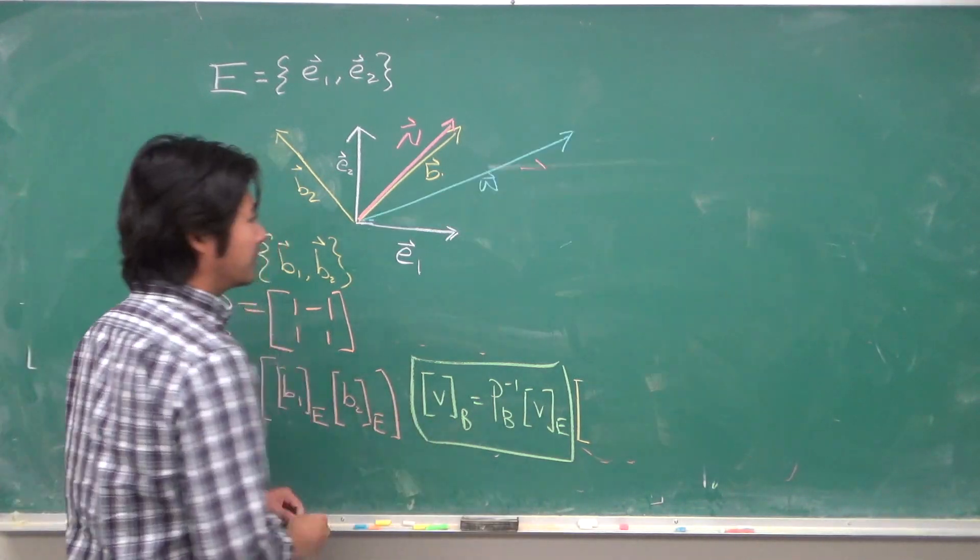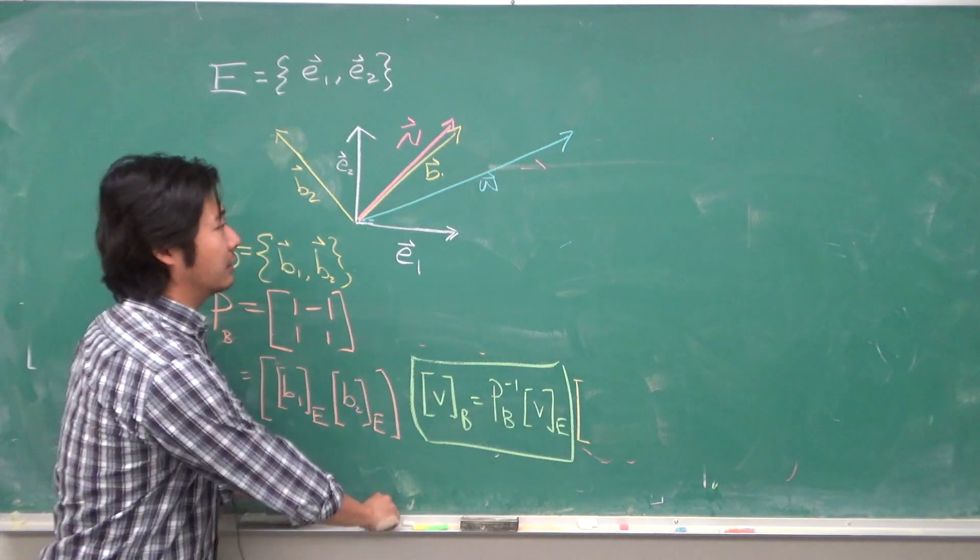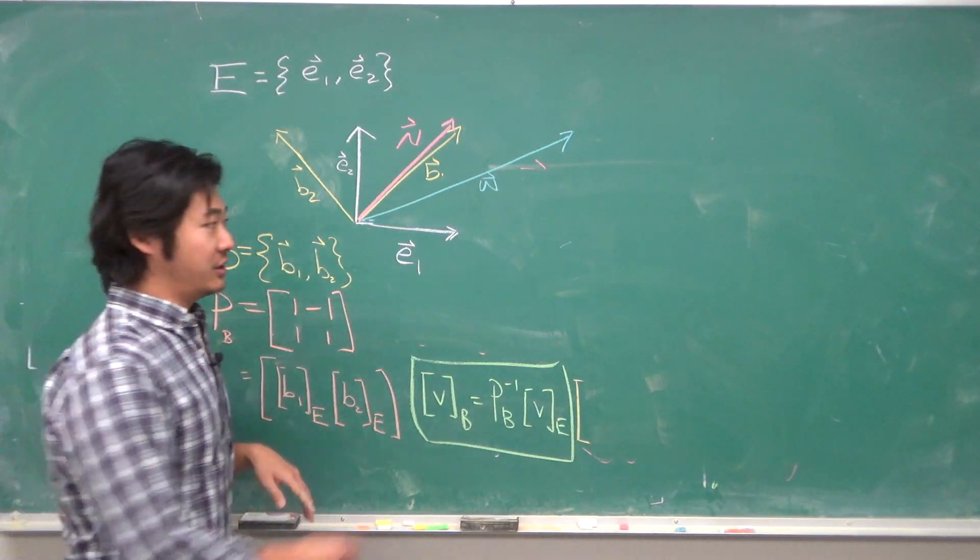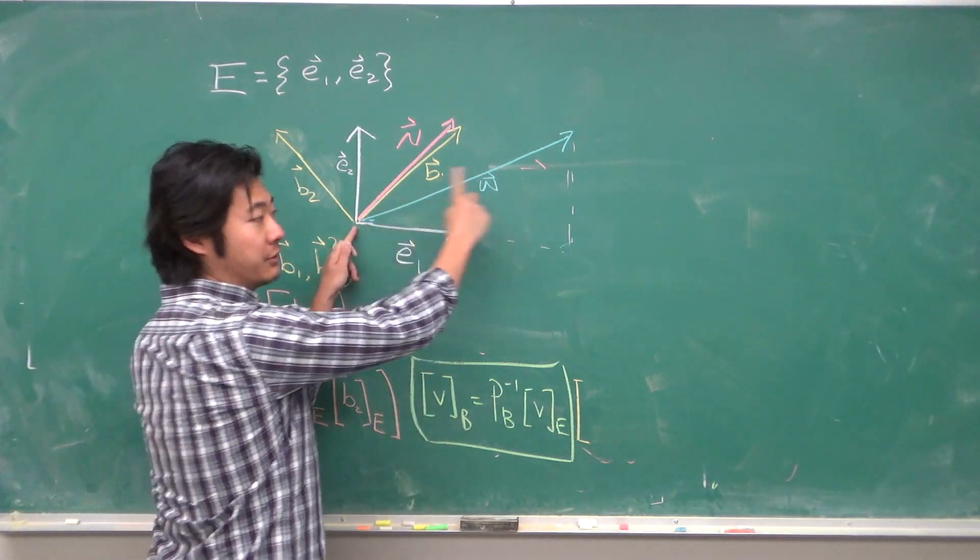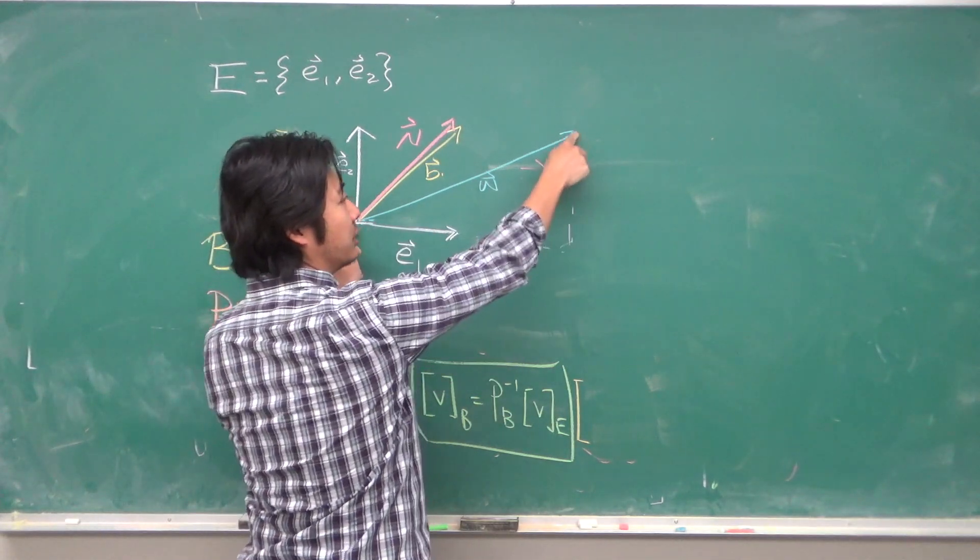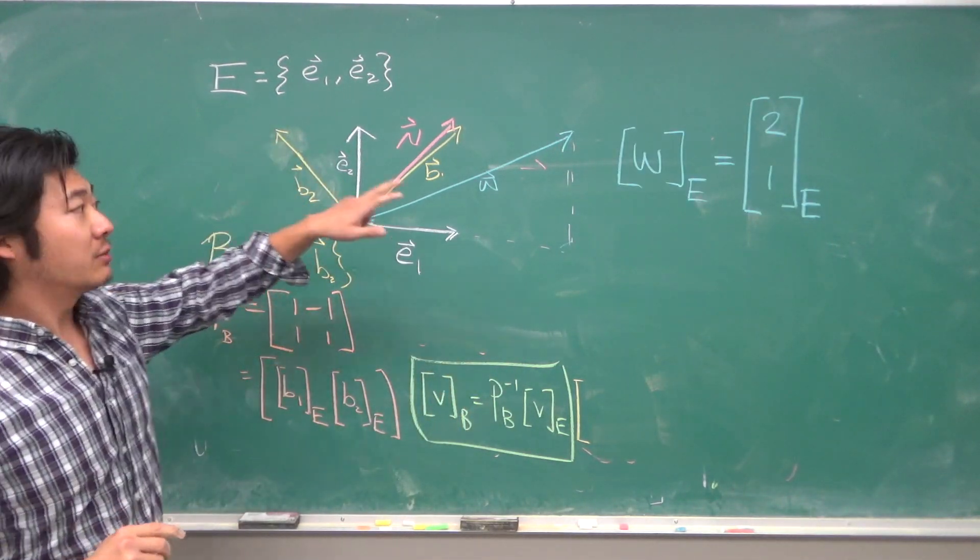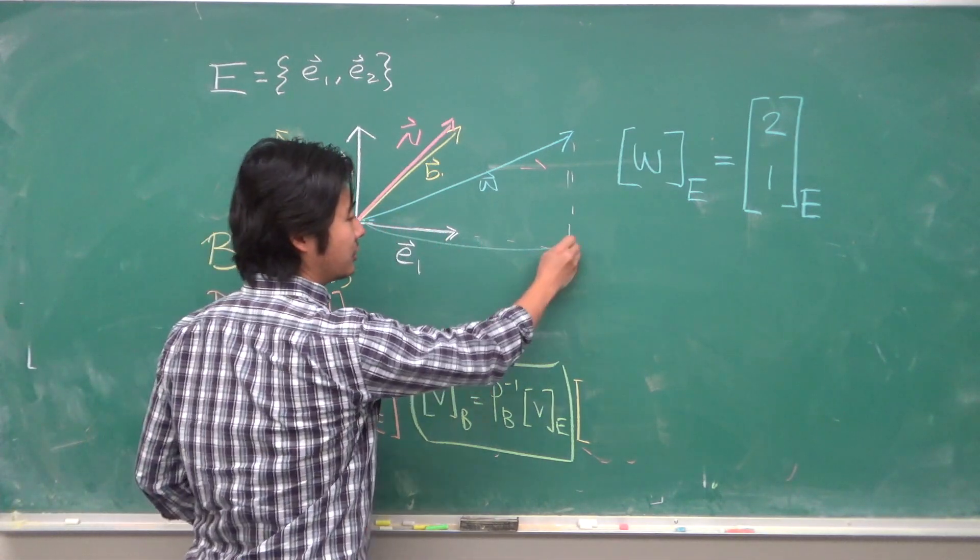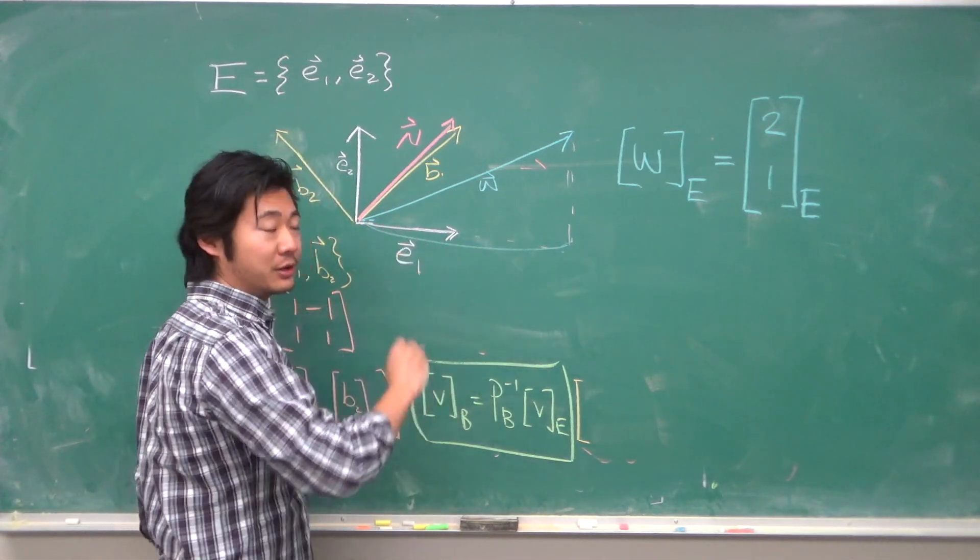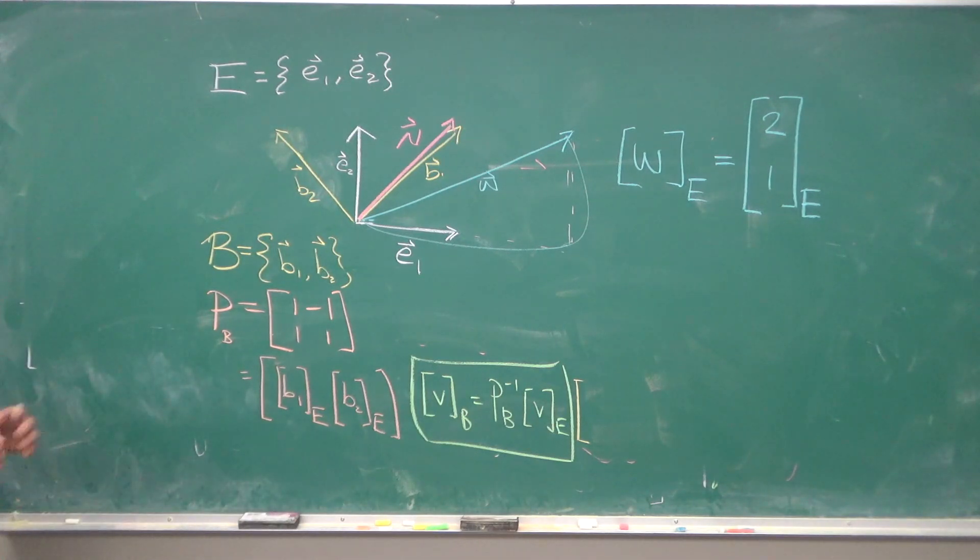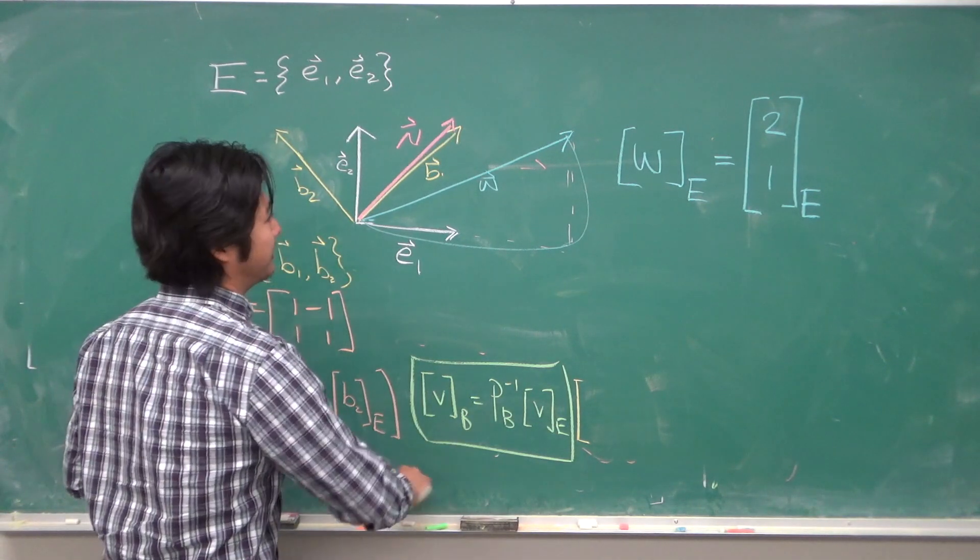So, let's do another example. So, let's say I have this vector W, which I'm imagining goes two units in the E1 direction and one unit in the E2 direction. So, W in the E basis will be 2, 1, right? Two units in the E direction, E1 direction, one unit in the E2 direction.